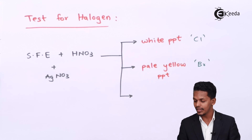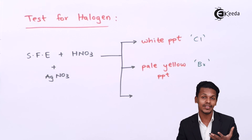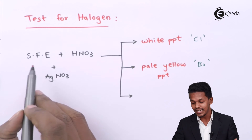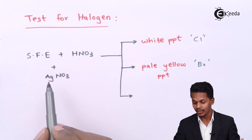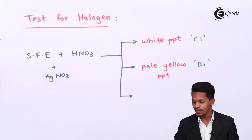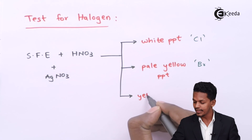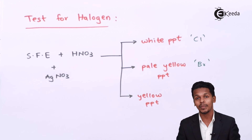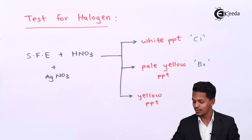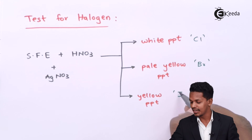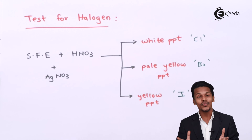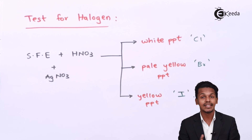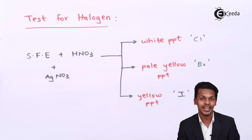For iodine detection: when the sodium fusion extract is treated with HNO₃ and AgNO₃, a yellow precipitate that is soluble in NH₄OH confirms that iodine is present in the organic compound. This is how we detect nitrogen, sulfur, and halogen present in organic compounds using Lassaigne's method.